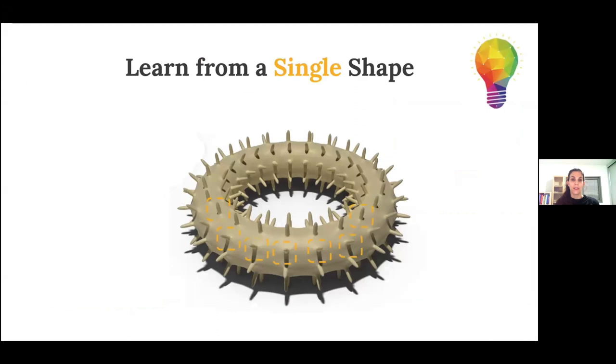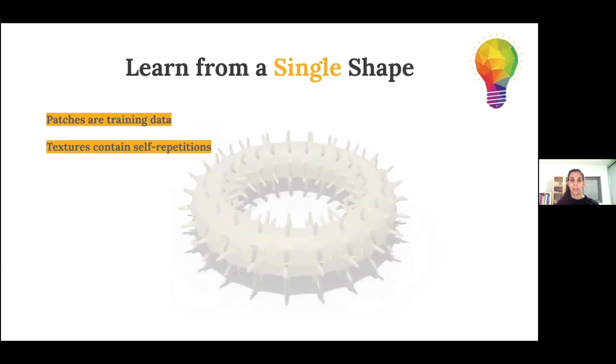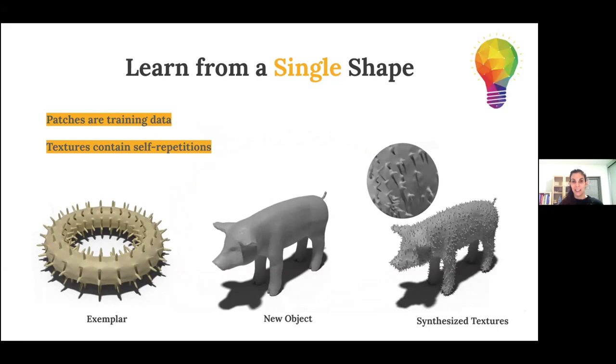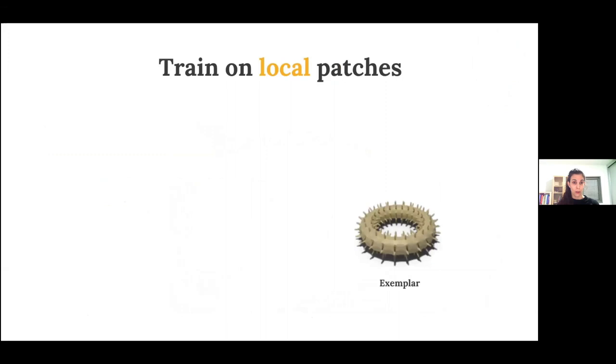One thing you might notice is that neither of these techniques really generalize to new examples, since the self-prior is tailored to the given input itself. But I will show you that it is possible to train on a single example and generalize to new unseen shapes.